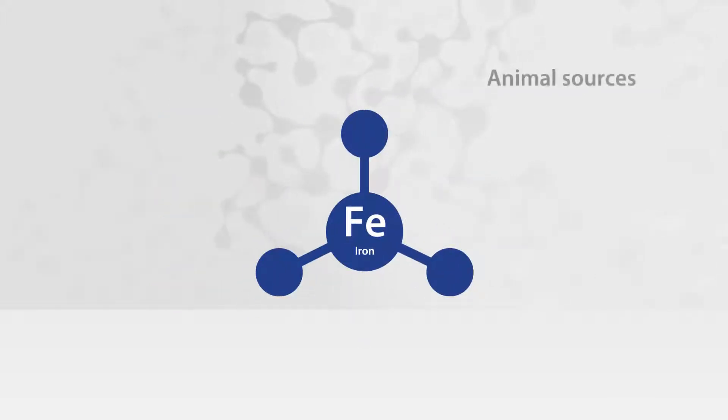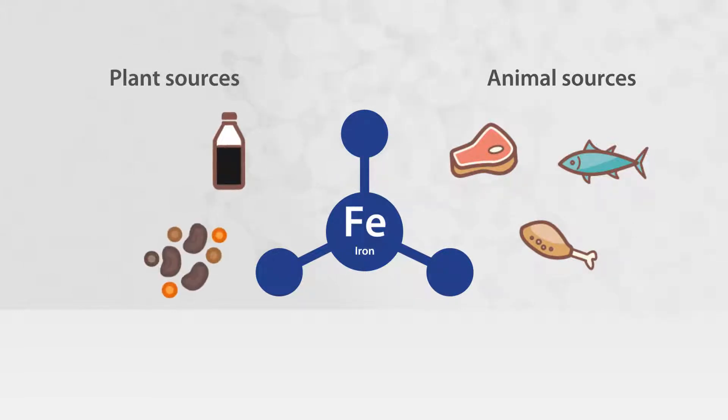Dietary sources of iron include red meat, fish, and poultry. Plant sources of iron include molasses, lentils, and dark green leafy vegetables such as spinach and silverbeet. However, these vegetarian sources of iron may not be as well absorbed as animal sources.